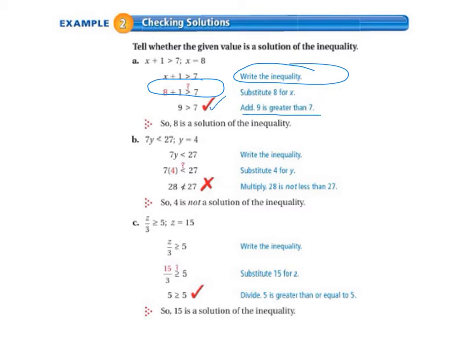Letter B, 7Y is less than 27. And we're going to check to see if Y equals 4 is a solution for that inequality. So we write the inequality and then we substitute 4 for Y. 7 times 4 is less than 27. And when we multiply, we get 28, because 7 times 4 is 28. 28 is not less than 27. So 4 is not a solution of the inequality.